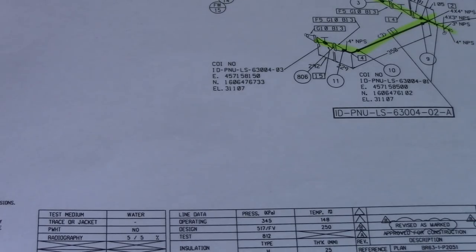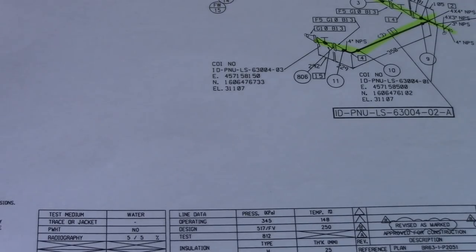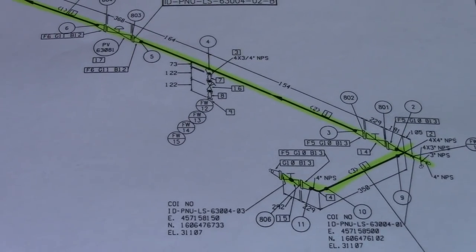Revision status — number eight — we will see in the line number area, the revision and sheet number. This is important: you will see here if our drawing is updated or not updated. Always check the revision status. Number nine is material class — what type of materials to be used on this line: what type of pipe, what type of valve, what type of fittings.